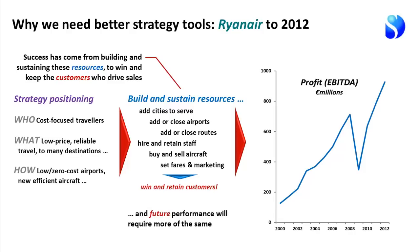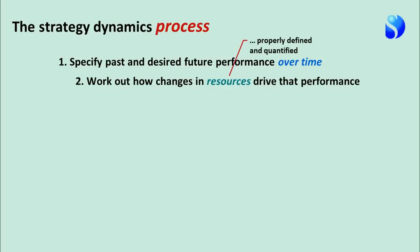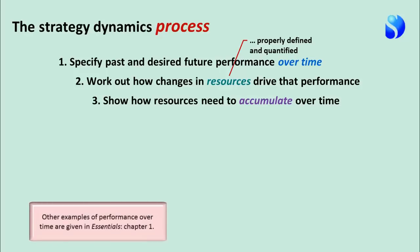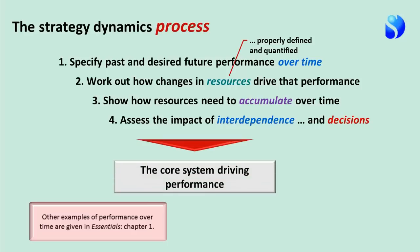Looking to the future, the same things have to happen for the company to continue growing customers and profit. The strategy dynamics process has four main steps. The first is to specify the past and desired future performance of the organization over time. The second is to work out how changes to resources drive that performance, properly defining and quantifying those resources. The third step is to show how those resources accumulate over time — often quite long periods. The fourth step is to assess how interdependence works and depends on management decisions. Together these four steps yield a quantified, rigorous description of the system driving the organization's growth and performance.